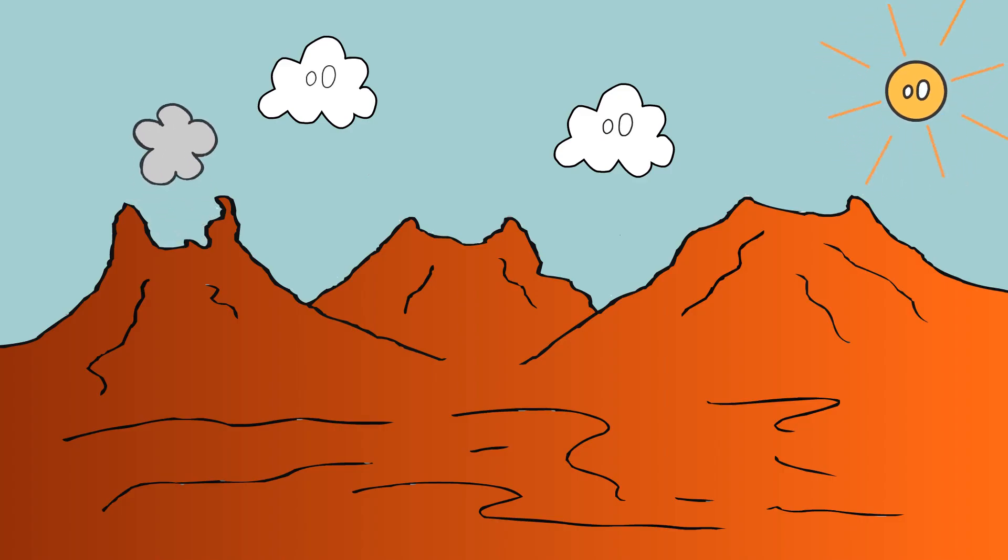Ever since the first life arose roughly 3.5 billion years ago, organisms have been adapting to their environment through a process known as evolution by means of natural selection. This process has created a multitude of species and has allowed life to spread to all the different environments that can be found on planet Earth.